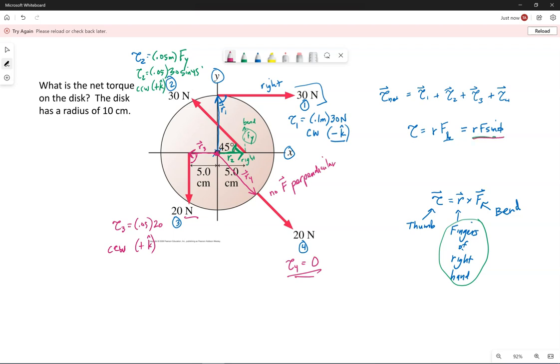Now, the equation over here, RF sine phi, the angle between these is 180. Sine of 180 is zero. So you can get there as well from that equation, but also try to have that conceptual thought process behind it.